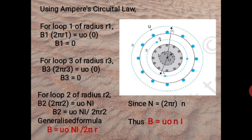Now, applying Ampere's circuital law to loop number 3 with radius r3, it passes through point Q. We have the equation B3(2πr3) = μ0(0). Again, there is no current enclosed, thus i = 0. This gives us B3 = 0. Thus, no field exists at any point outside the toroid.